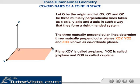Plane XOY is called XY plane, YOZ is YZ plane and ZOX is XZ plane.